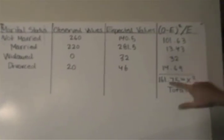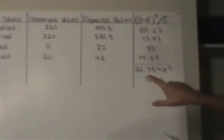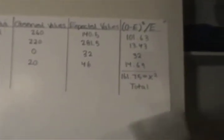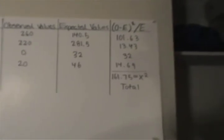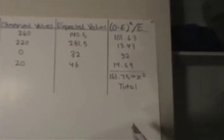And we did that for non-married, married, widowed, and divorced. And when we add those all together, we get 161.75, which is x squared. And x squared is the chi-square statistic that we're going to use later to reject the null hypothesis.